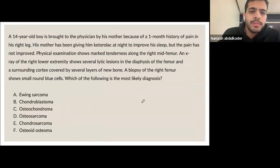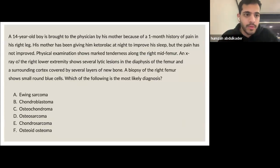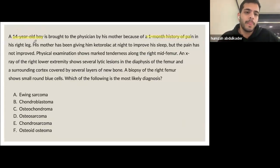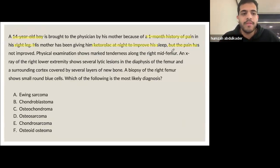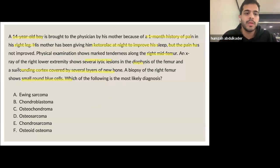A 14-year-old boy is brought to the physician by his mother because of a one-month history of pain in his right leg. The mother has been giving him ketorolac at night but the pain has not improved. Physical examination shows marked tenderness along the right mid-femur. X-ray shows lytic lesions in the diaphysis of the femur with surrounding cortex covered by several layers of new bone. Biopsy of the right femur shows small round blue cells. What is the most likely diagnosis?